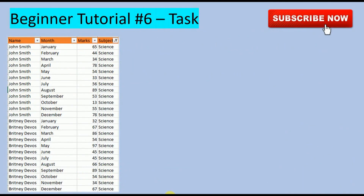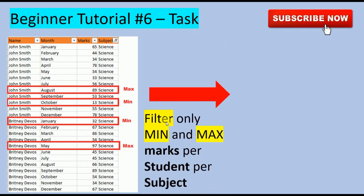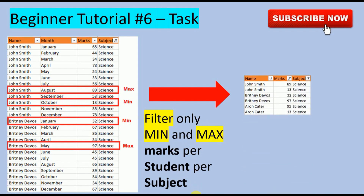So in today's tutorial, this will be my data sheet — it has name, month, marks, and subject columns. What I want is to get each name, subject, and the maximum and minimum marks, and extract these records into a separate table. So my task is to filter the minimum and maximum marks per student per subject, and the output will show name, marks, and subject, where that mark is the minimum and maximum.